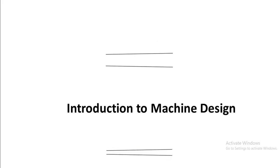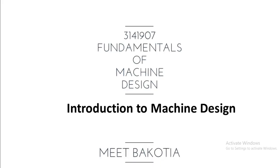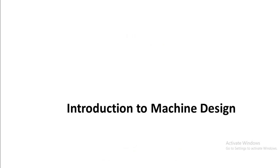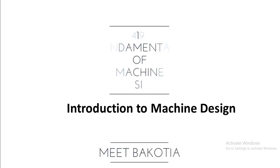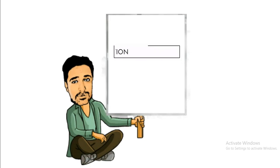Introduction to machine design, chapter number five of 314190-07, Fundamentals of Machine Design. We are going to talk about what is standardization and its advantages.